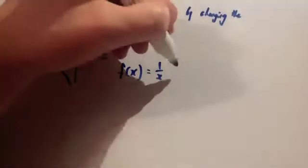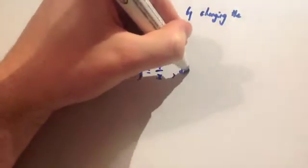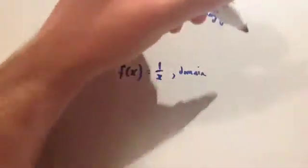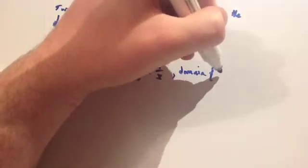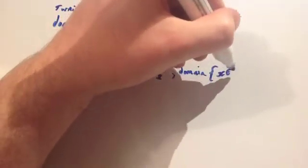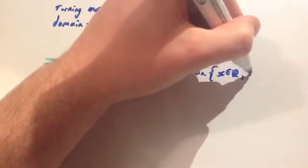Okay? So you would write the domain, and your little curvy brackets like that. And you would write x belongs to the set of real numbers, comma, x does not equal 0.